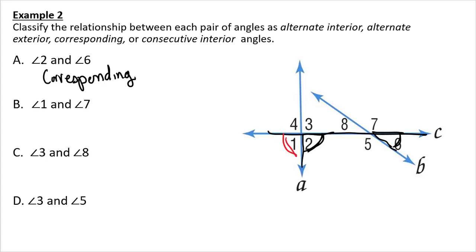Angle one and angle seven. Those are alternate exterior.